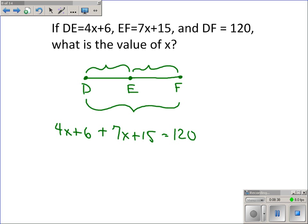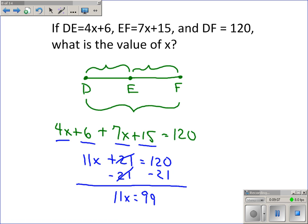I will solve this equation by first combining the like terms. 4X and 7X makes 11X's, and 6 plus 15 is 21, and that's equal to 120. Now, I will solve this by first doing the opposite of adding 21, which is subtracting 21. I get 11X is equal to 99. And I divide both sides by 11, because that's the opposite of multiplying by 11. And X is equal to 9.